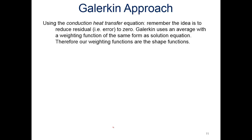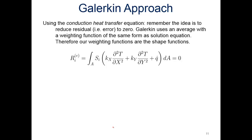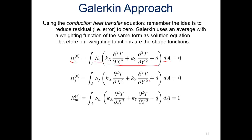The Galerkin approach says we want to reduce the residual error to zero — force it to be zero. Galerkin uses an average with a weighting function in the same form as the solution equation, so our weighting functions are the shape functions. We'll have four of those — four residual equations. We have the residual equation for node I using the shape function of node I, with the governing equation. We integrate that over the area and it all needs to equal zero. We'll do that for nodes J, M, and N as well.